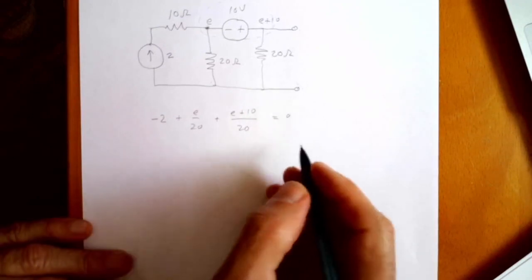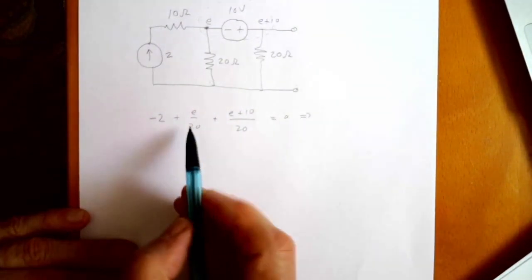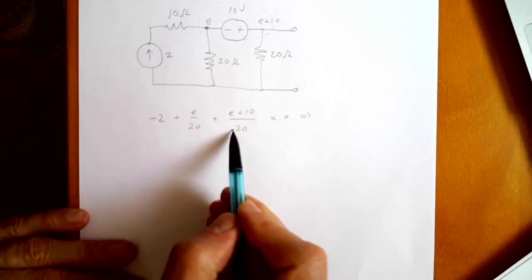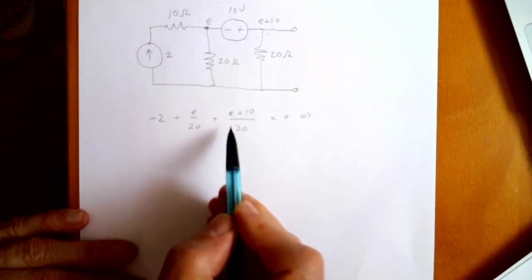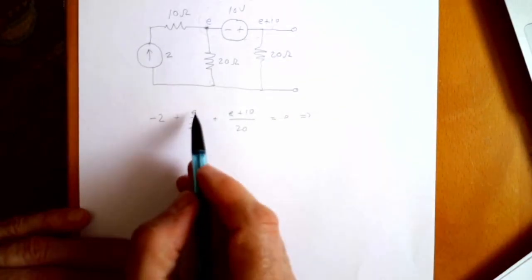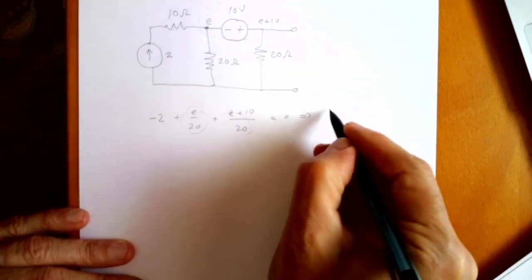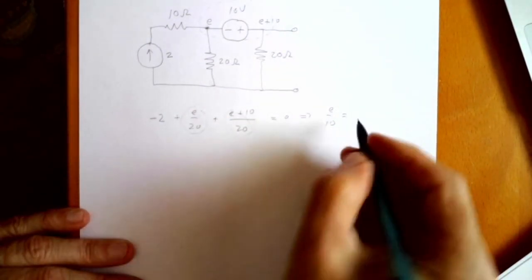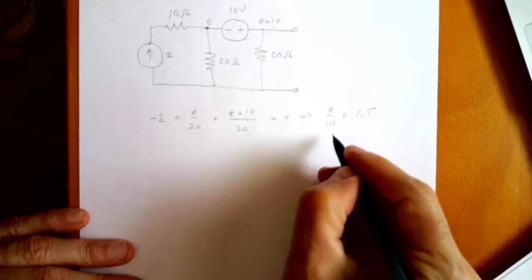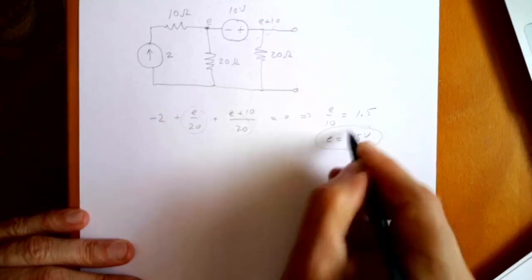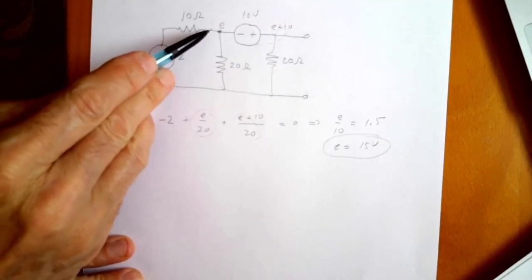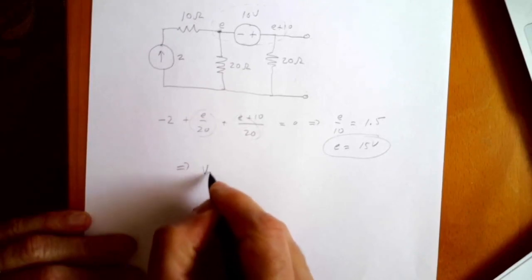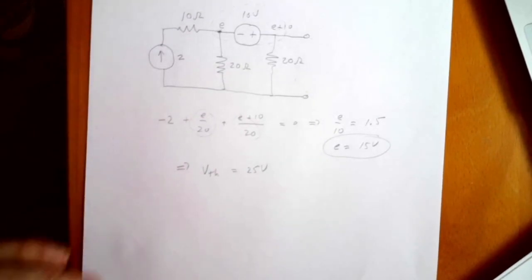Let's go ahead and solve this. I'll factor: E divided by 20 plus 10 divided by 20 is E divided by 20 plus a half. So I'm going to get E divided by 20 and another E divided by 20, which is E divided by 10. That's going to equal plus two, and then minus a half brings it to 1.5. So that means E has got to be 15 volts. This point is E plus 10, so the voltage drop across these external terminals — my Thevenin equivalent voltage — is 25 volts.